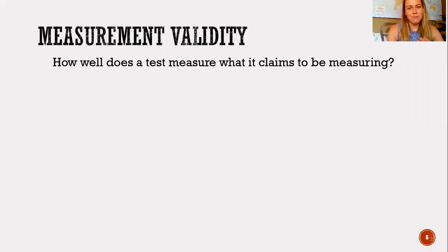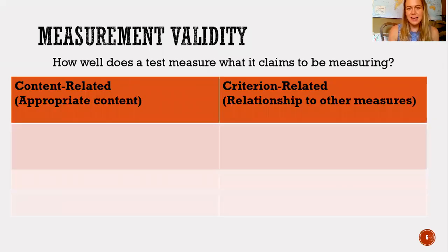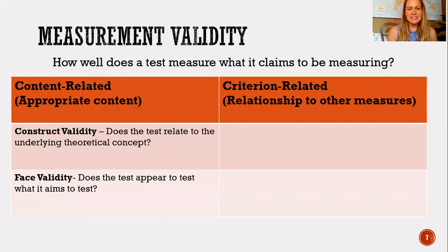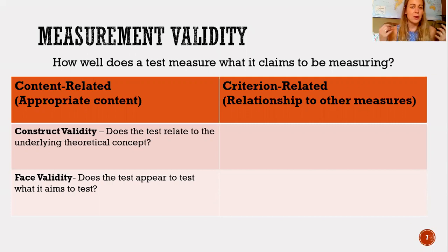Those six definitions can basically be fit into two different categories: the extent to which the content in a measuring procedure is appropriate, and how the test scores relate to scores on other tests. Starting on the left, construct validity is a little bit abstract — it's kind of the goal of everything. Does the test relate to the underlying theoretical concept? Does IQtest.com relate to your intelligence? This is a little bit fuzzy, especially when we don't have a clear definition as a field of what intelligence is.